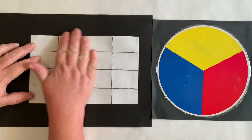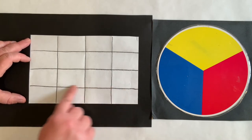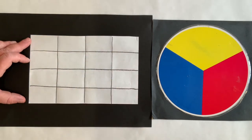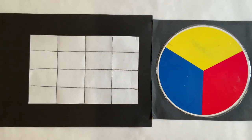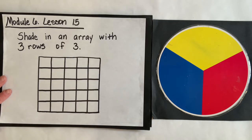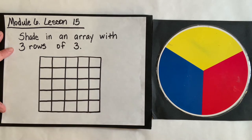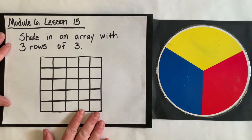Once you have your three straight lines drawn — giving us four columns and four rows — I want to show you a word problem so we can shade our array with the primary colors. The problem says: shade in an array with three rows of three. Instead of the usual square tiles, we made our own rectangular shaped tiles. An array has rows and columns.